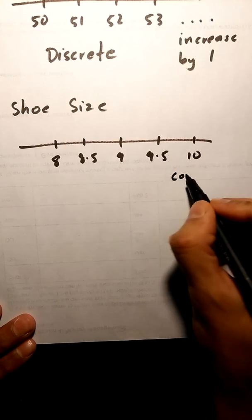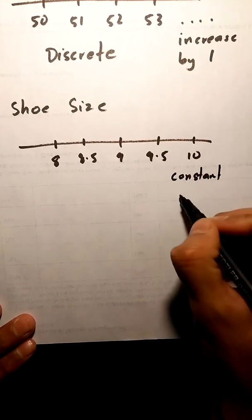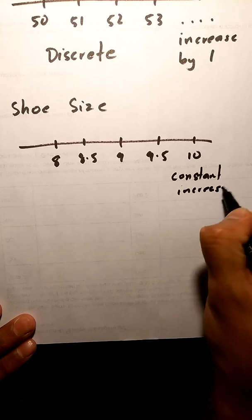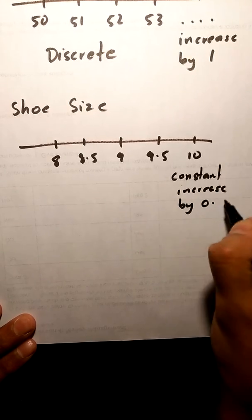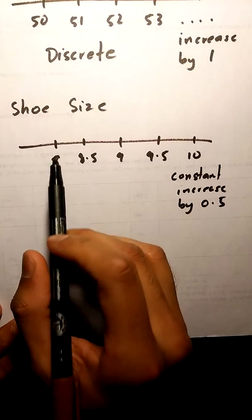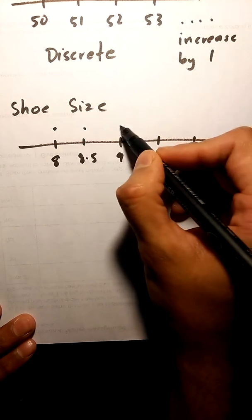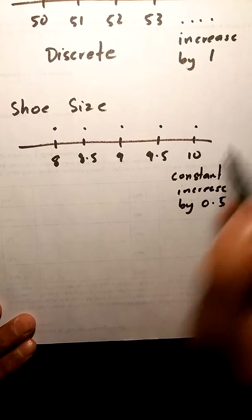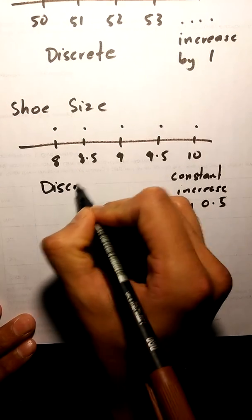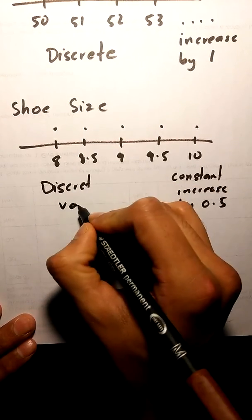Again, there's a constant increase by 0.5. You can't have a shoe size between 8 and 8.5 which means you can only take these fixed values, making it again a discrete variable.